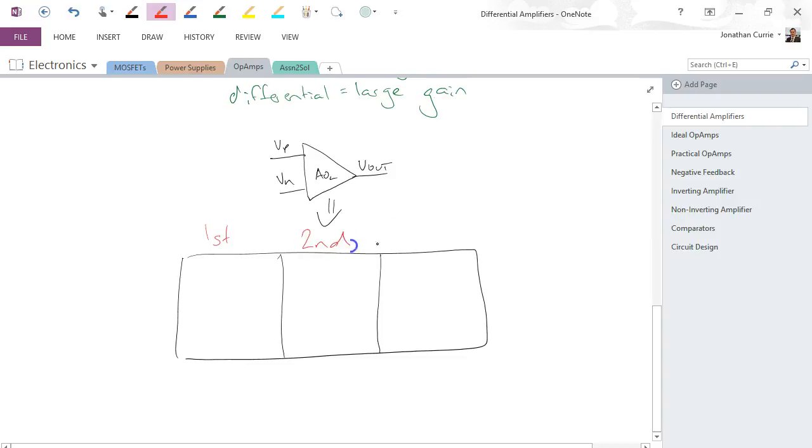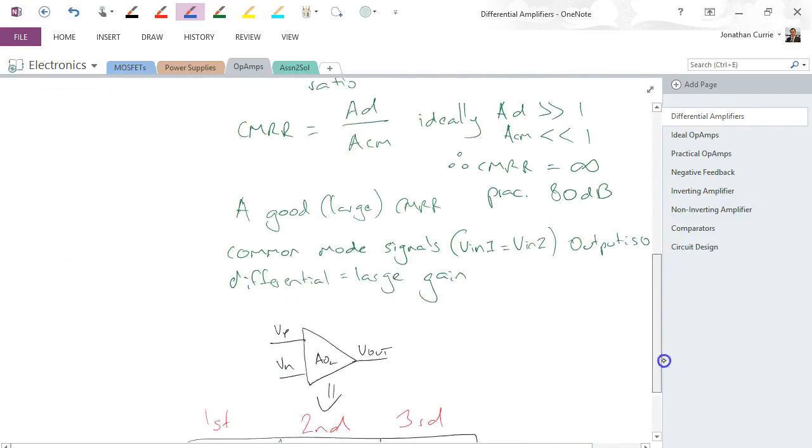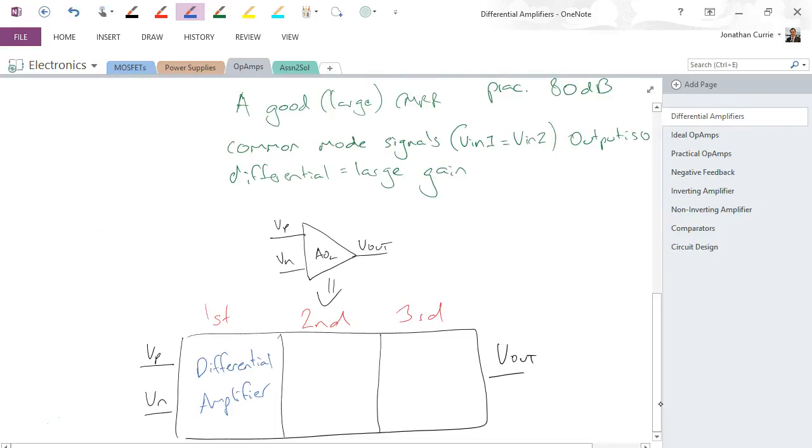First stage, second, and third stage. VP, VN, Vout. In the first stage, we have a differential amplifier which is exactly something like this circuit here. However, practically, we normally don't have resistors here. We actually have active loads formed by other transistors.